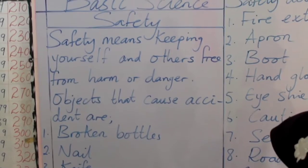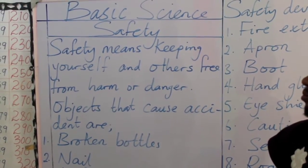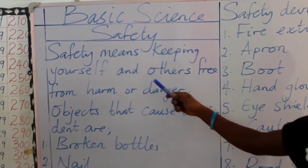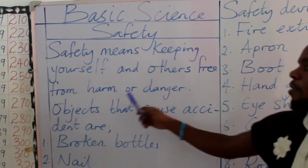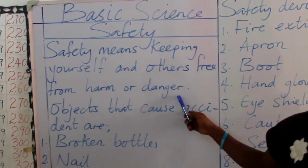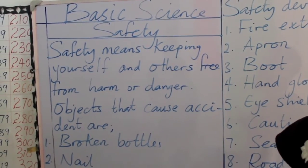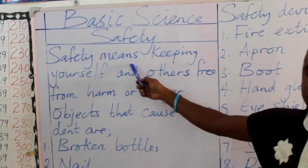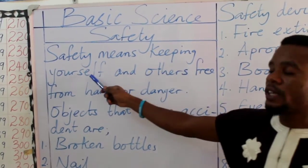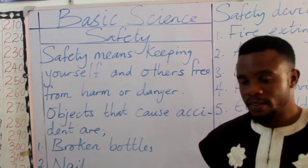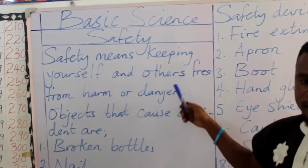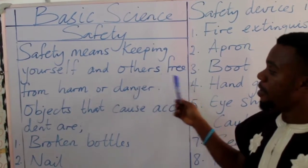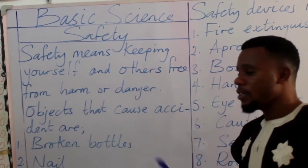Now we want to look at the definition of safety. Safety means keeping yourself and others free from all danger. I'll take it again. Safety means keeping yourself and others — your siblings, your friends, or your loved ones — free from all danger.